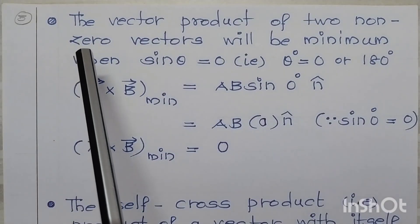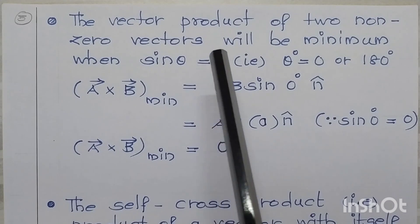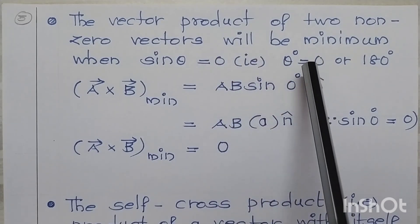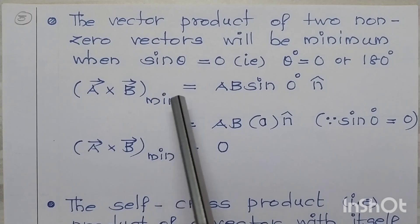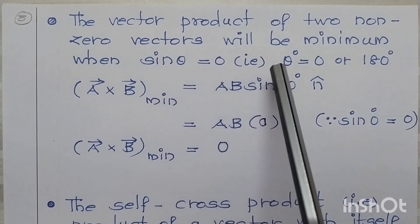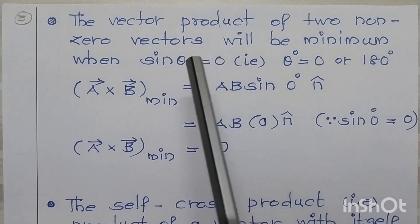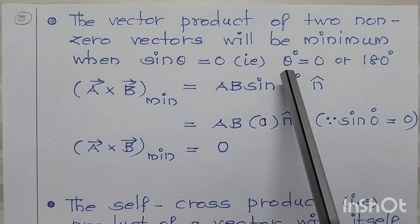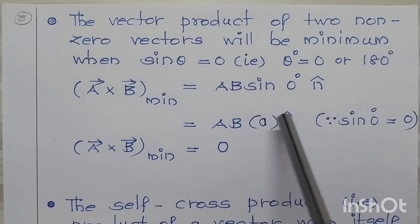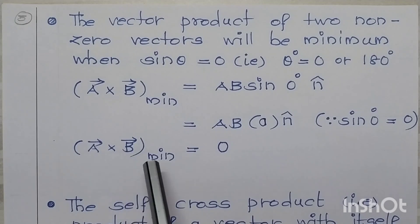The third property: the vector product of two non-zero vectors will be minimum when sin theta is equal to 0, that is, when theta is equal to 0° or 180°. A vector cross B vector minimum equals AB sin 0° N-cap. Since sin 0° equals 0, this becomes AB into 0, so A vector cross B vector minimum is equal to 0.